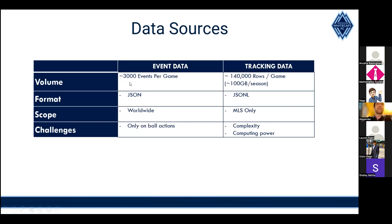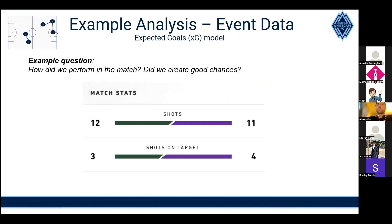In terms of scale, tracking data is about 100x the size of event data — around 100 gigabytes per season, which isn't big data per se but is a decent chunk. The trade-off is that tracking data is only available for MLS, so you can't apply those metrics to players in other leagues for recruitment. Event data, by contrast, covers about 100 leagues worldwide, so depending on your project you pick the appropriate data source.